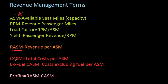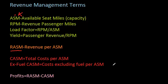On the cost side, the most relevant metric is CASM — Cost per Available Seat Mile. The airline takes its total costs, spreads them across all seat miles, and arrives at one number to compare against RASM. You'll often see ex-fuel CASM reported separately, because fuel is a large portion of an airline's cost base and is considered largely uncontrollable. Ex-fuel CASM is a better metric of controllable costs — if ex-fuel CASM is up 10% year over year, that means the airline is not managing its controllable costs well.